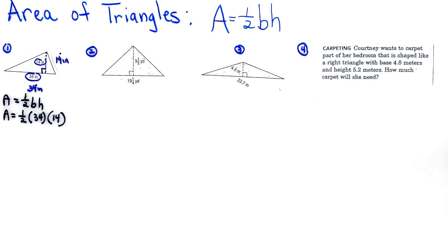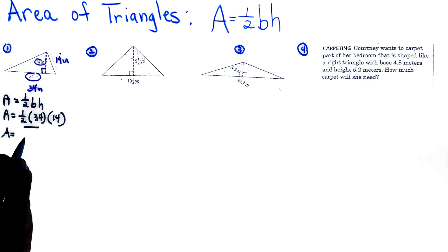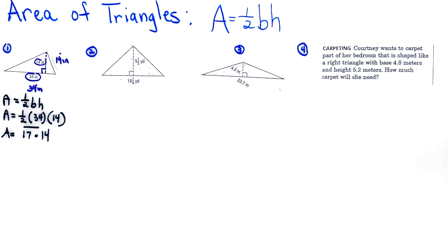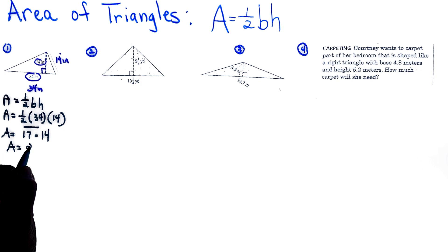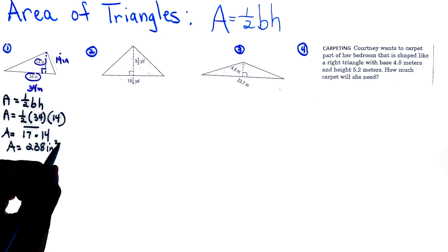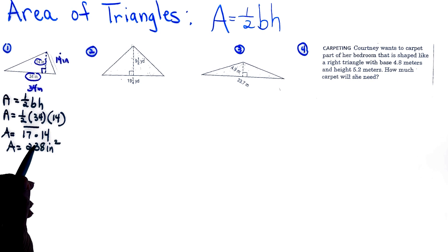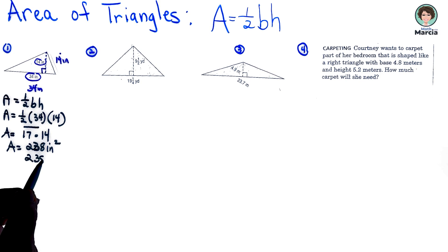When we're doing that multiplication, we're going to do this first. Area is equal to one-half of 34, we know is 17, times our 14. Now finally our answer is 238 inches squared. Remember area is always squared. 238 inches squared.